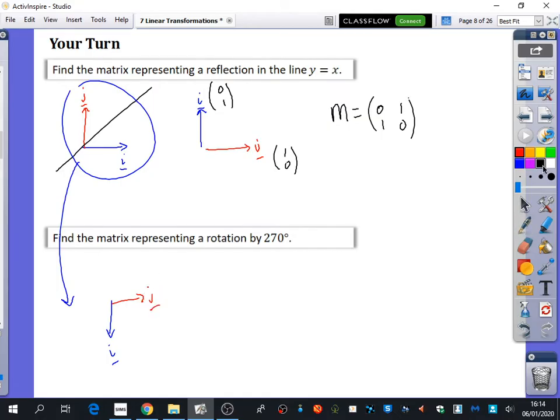So if we're going to represent those, i has been, is what going to be? 0 minus 1. Oh, that's terrible. And j is 1, 0. So putting that together, the matrix is 0, like this. Yeah?